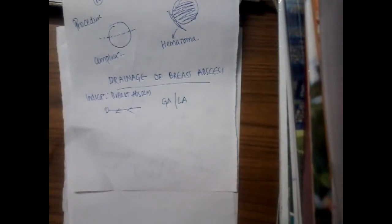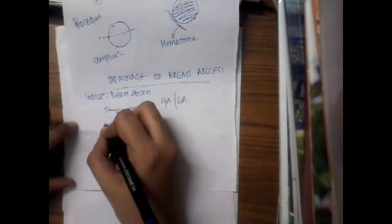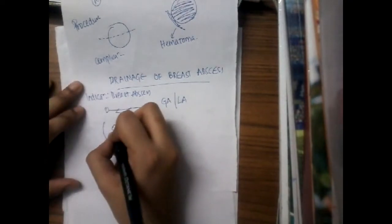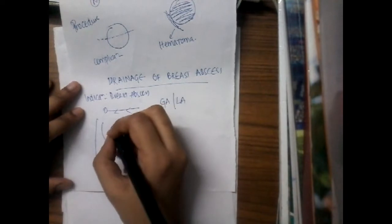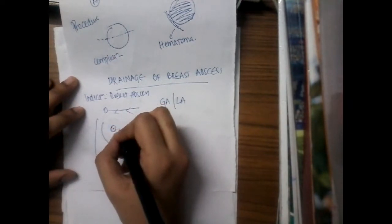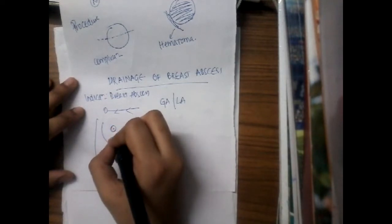Then you will paint the area with betadine iodine or spirit and then you will give an incision. If this is the nipple, you will give a semicircular incision over the swelling.